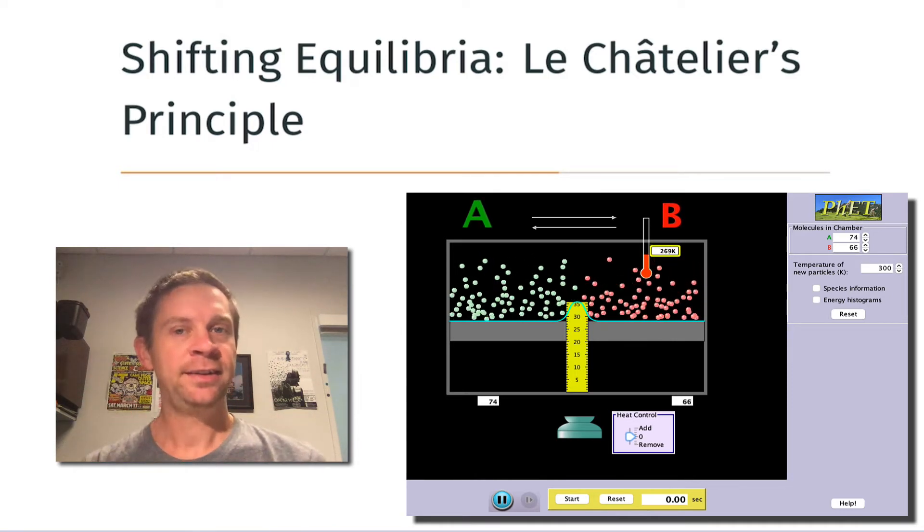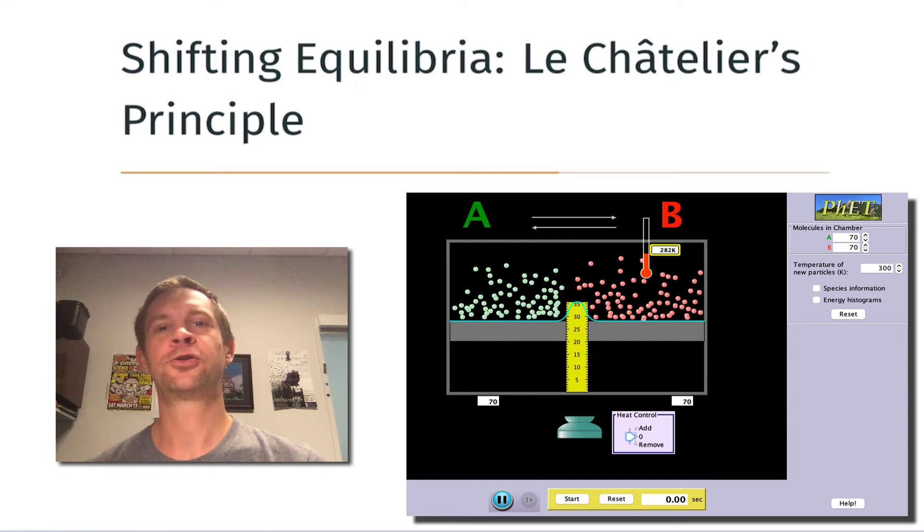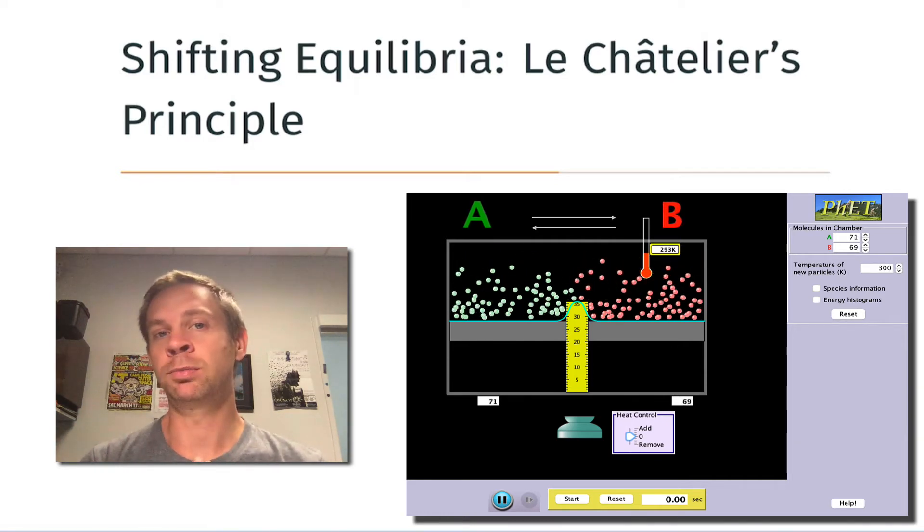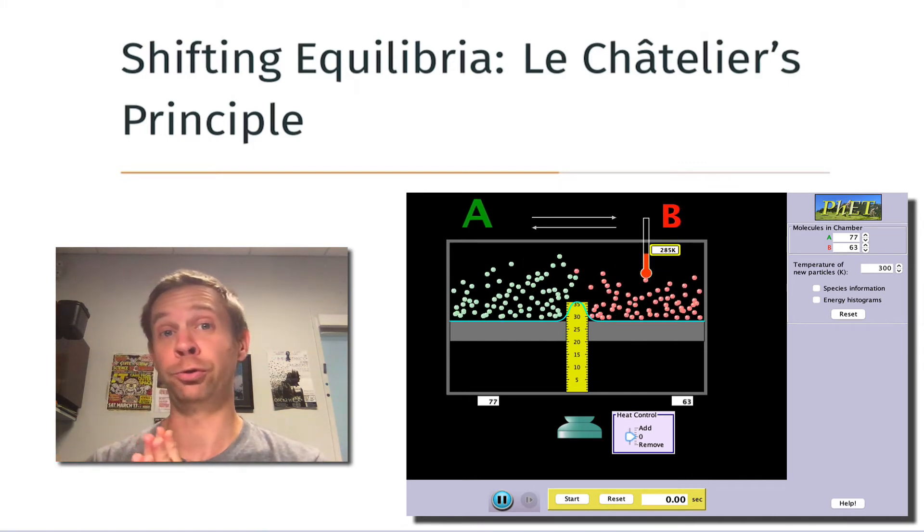Thanks to the dynamic nature of chemical equilibrium, the answer to this question is yes. We can drive a chemical equilibrium to one side or the other. For example, if we wanted to produce B...